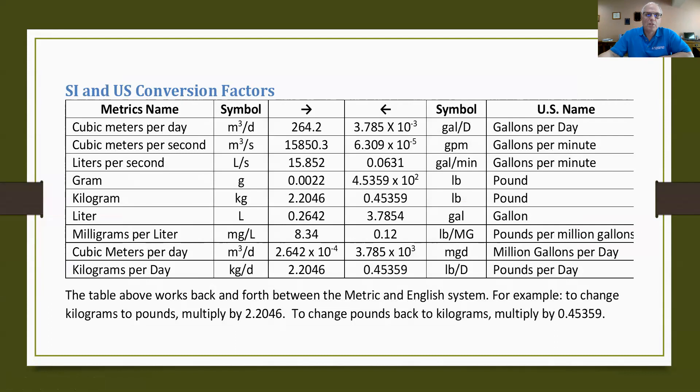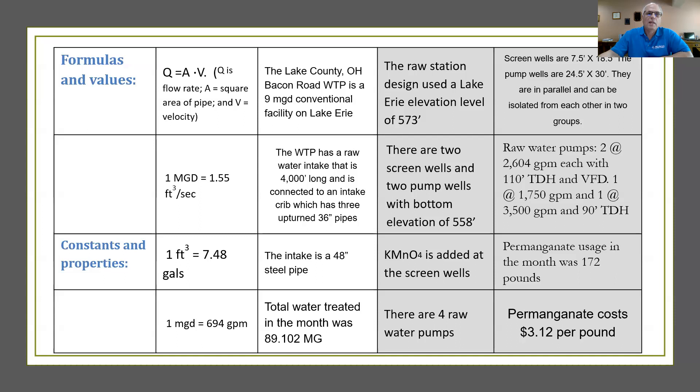This is a handy useful table that you can use when you need to convert between US and standard units, metric units. I think you know how to work that by now. This table here has been updated. It's got some of the familiar stuff, but starting with the third column you can see that we've gone to the Bacon Road water treatment plant now, which is a 9 MGD conventional facility on Lake Erie. The Aquarius plant was a 20 MGD facility. Now we're at nine.